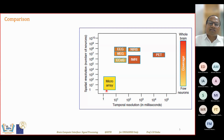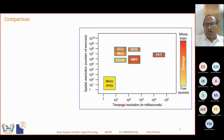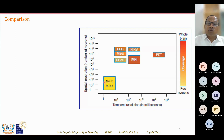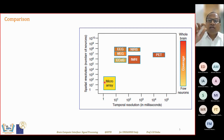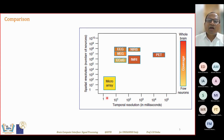This diagram compares all the modalities. Microarray is mostly on the hardware side and will be discussed in the next lecture. The horizontal axis shows temporal resolution in milliseconds, and the y-axis represents spatial resolution in number of neurons. For microarray, the number of neurons covered is between 10 and 100 — you are inserting a microarray chip inside the brain through surgery, so it covers very few neurons but has very good spatial resolution, with temporal resolution of about 1 to 10 milliseconds.